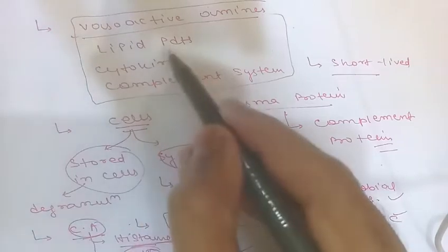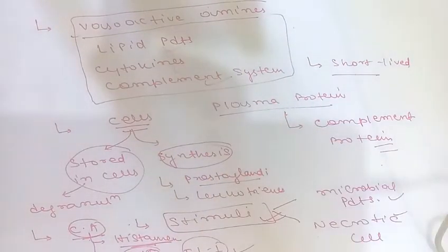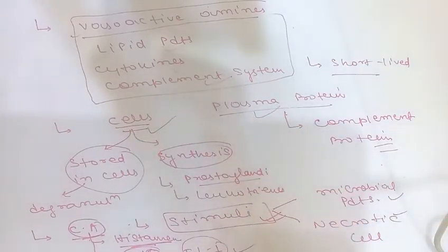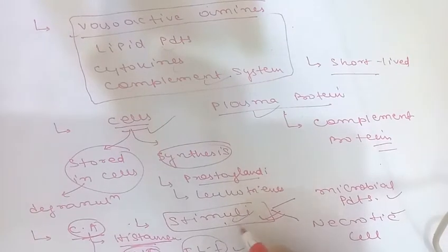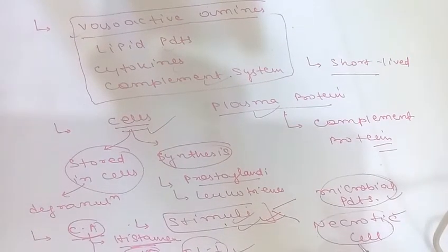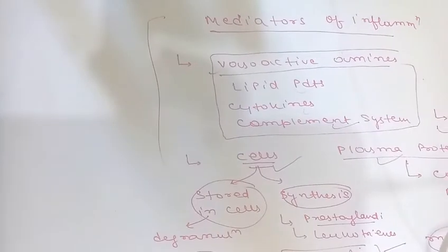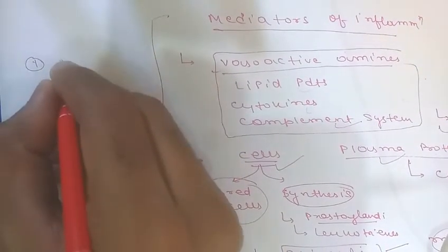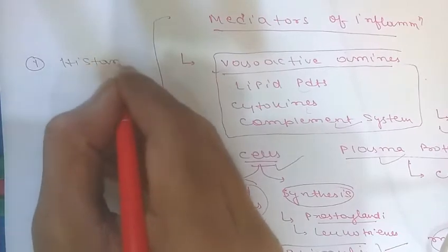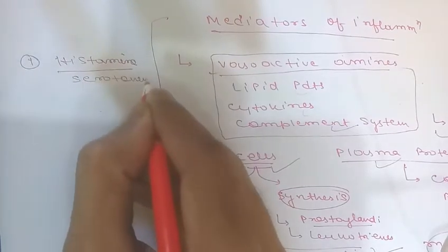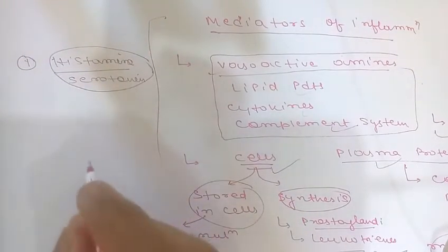To revise: mediators may be vasoactive amines, lipid products, cytokines, or complement system products. They may be secreted by cells or derived from plasma proteins. They are produced only in response to stimuli such as microbial products or necrotic cells. Most mediators are short-lived, and one mediator can stimulate release of another. Now we will discuss each individual mediator, starting with the vasoactive amines — histamine and serotonin.